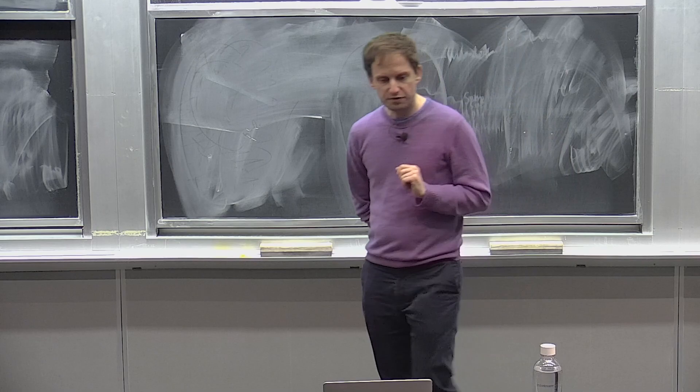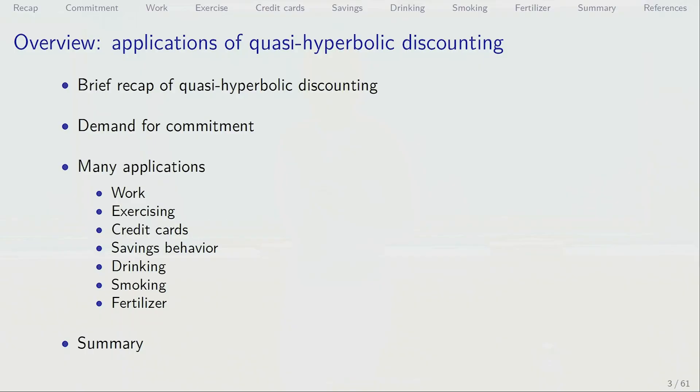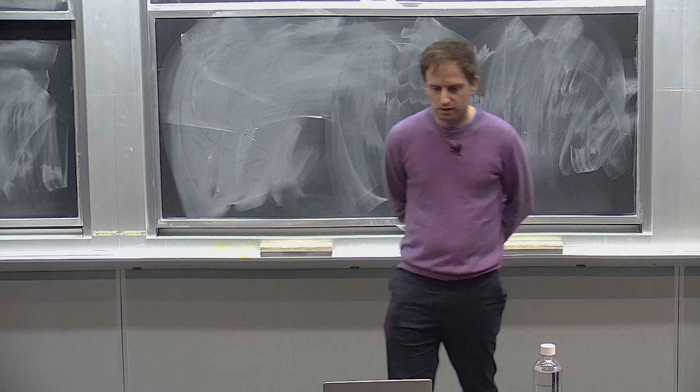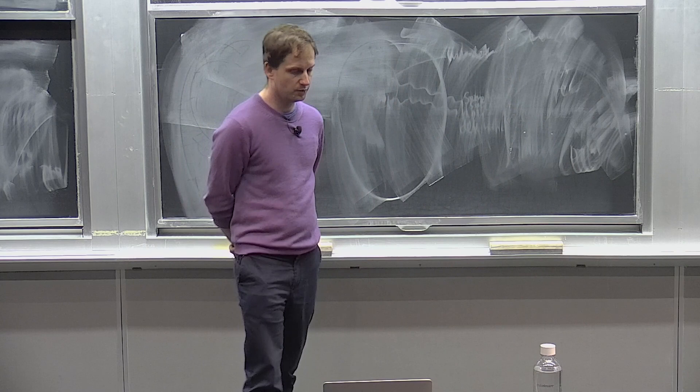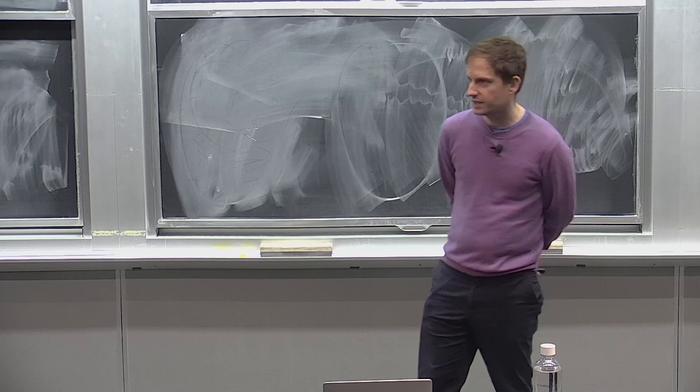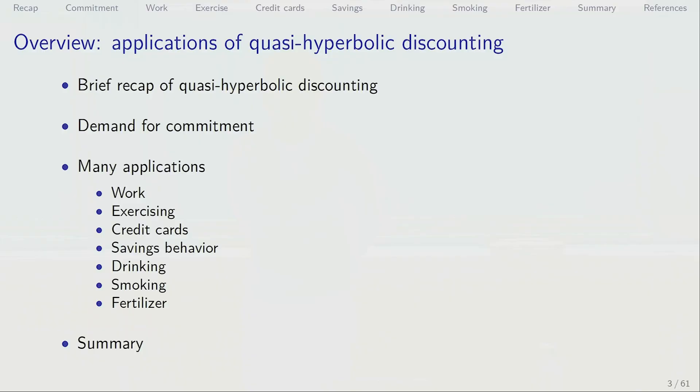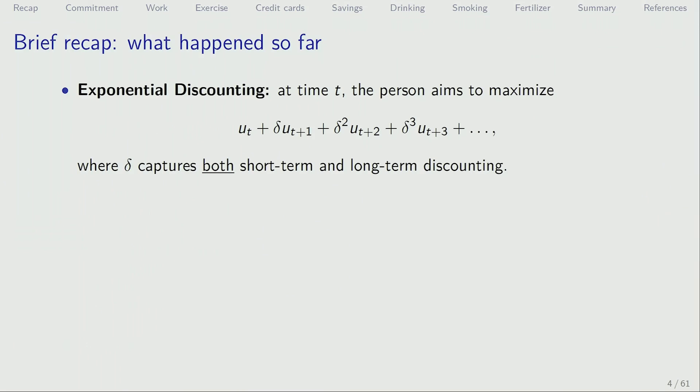I'm going to briefly recap what we discussed, and then talk about a number of different applications, ranging from work, exercising, credit card, savings behavior, drinking, smoking, fertilizer use, and so on. That'll spill into next lecture as well. I'm going to summarize where we are — what do we know about time preferences? What have we learned? What's useful for the world, and what things might be still up for investigation?